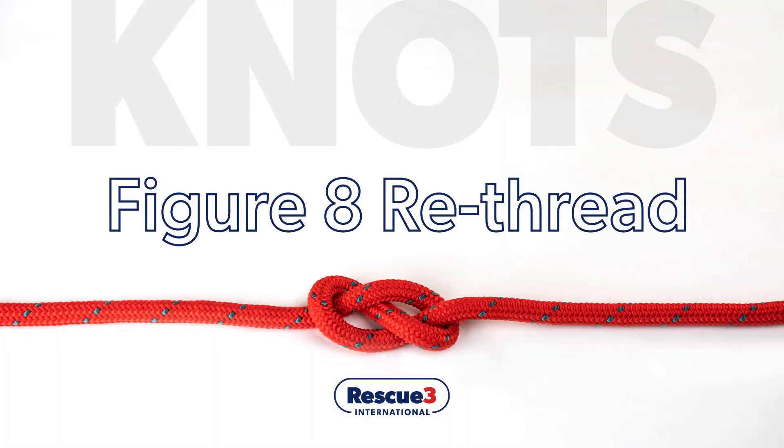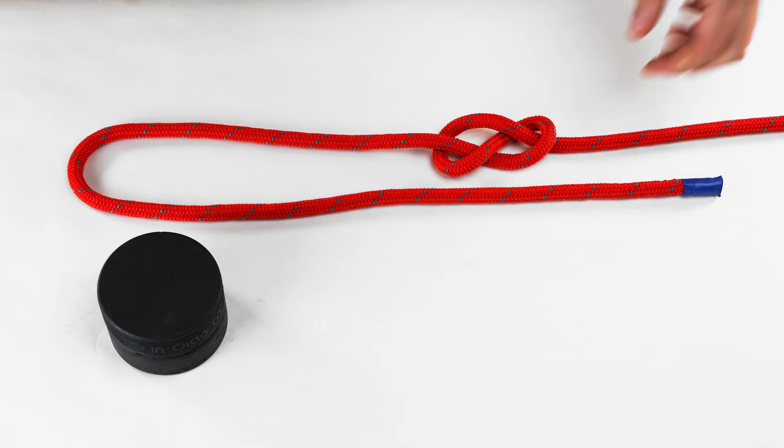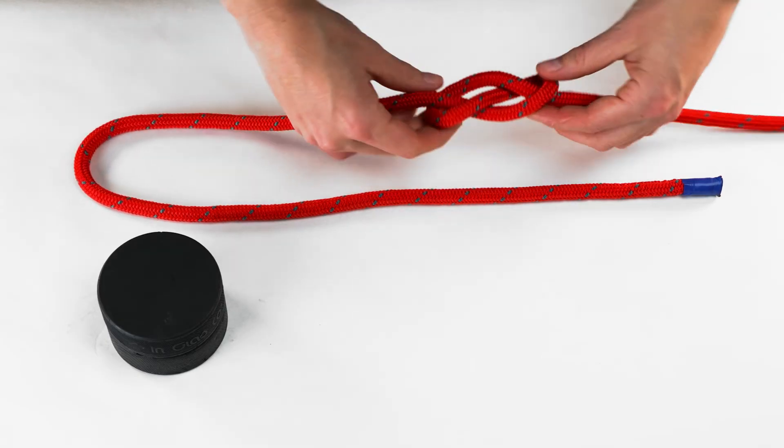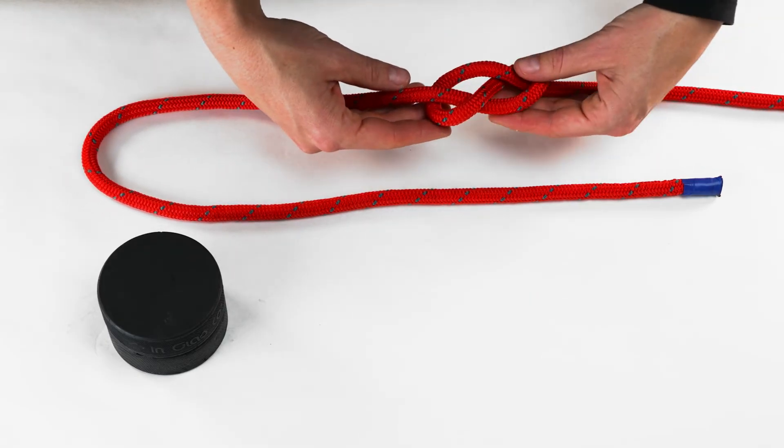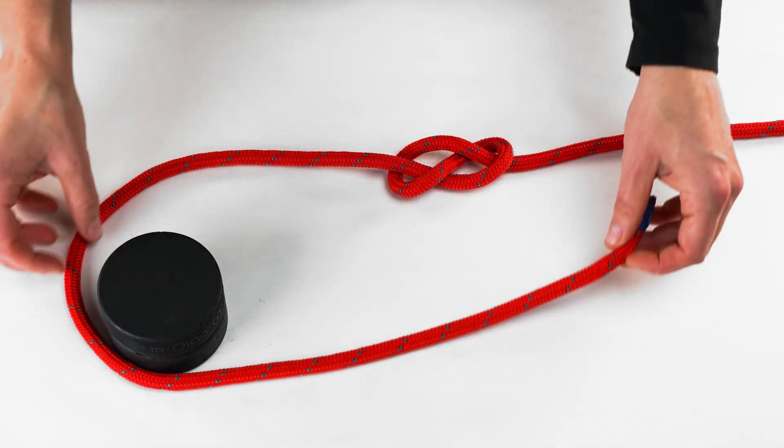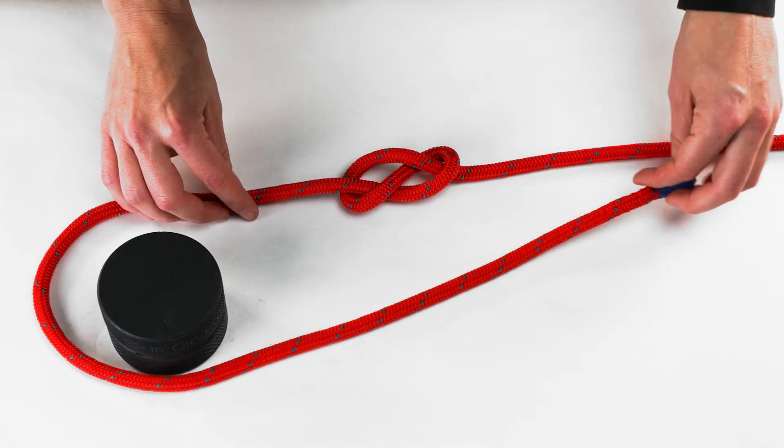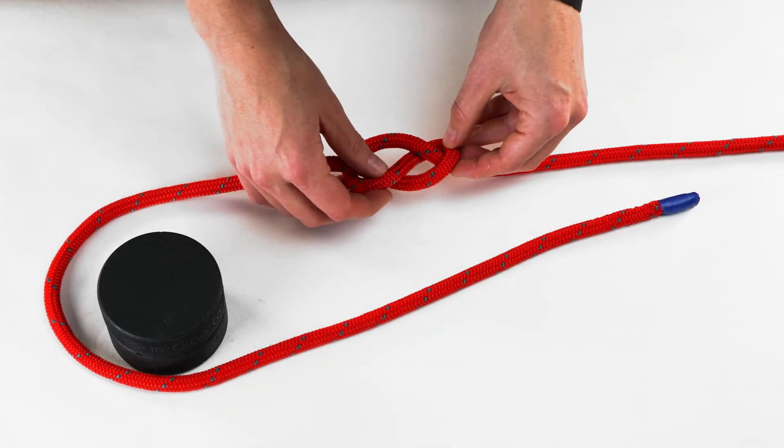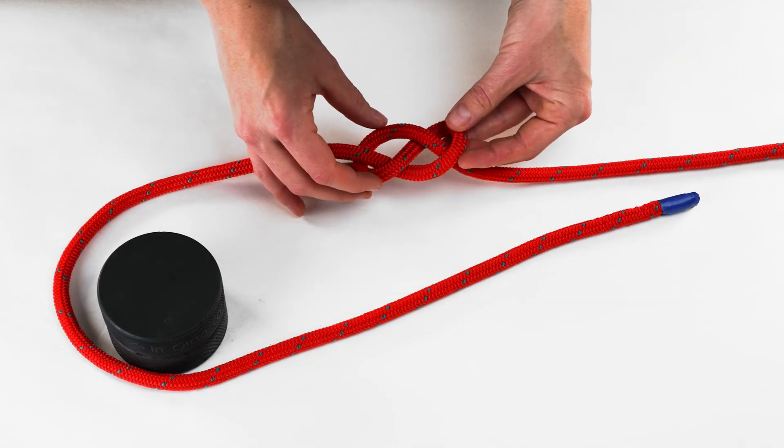Figure eight rethreaded. To rethread a figure eight, begin by tying a figure of eight in your rope. Next, take the end of the rope, bring it around the object, and before rethreading it, make sure there is enough space in the original figure eight.